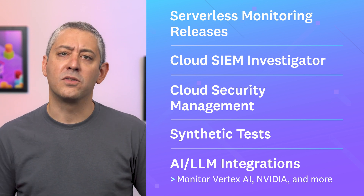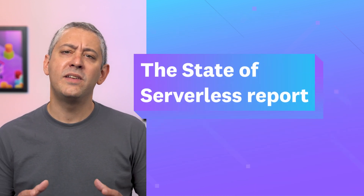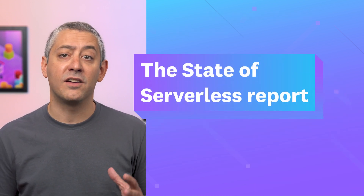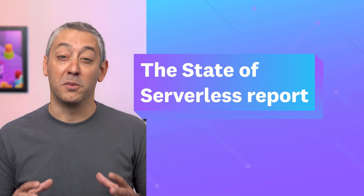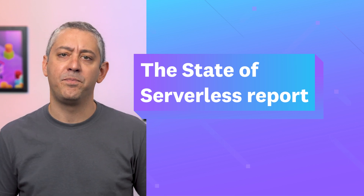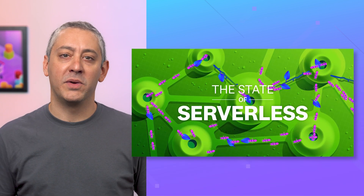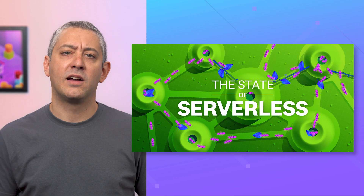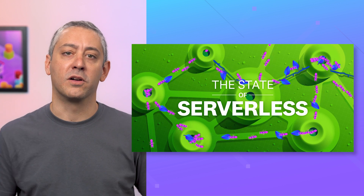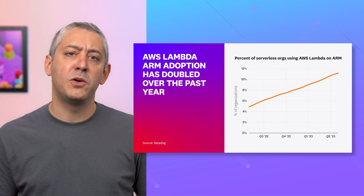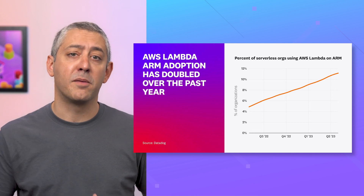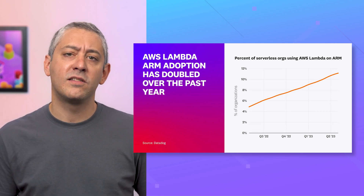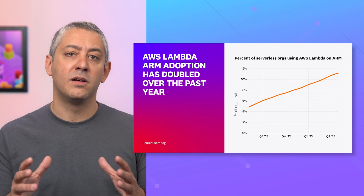Before we get to those, we've got an exciting update to share with you. We recently published our 2023 State of Serverless Report, which captures the most important trends across the serverless landscape. Building upon last year's report, we analyzed usage data for more than 20,000 Datadog customers to better understand how serverless is being used in the real world. For example, we've seen AWS Lambda use on ARM double over the past year, bringing the share of organizations using ARM to invoke Lambda functions to 11%. Dig into this key insight and more by checking out the link in our show notes.